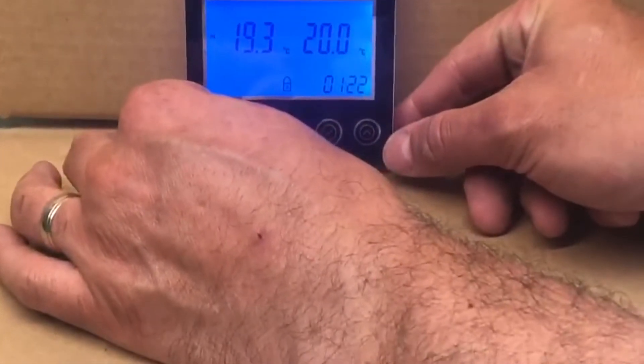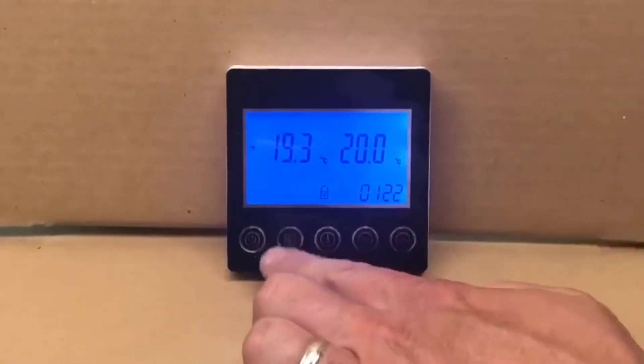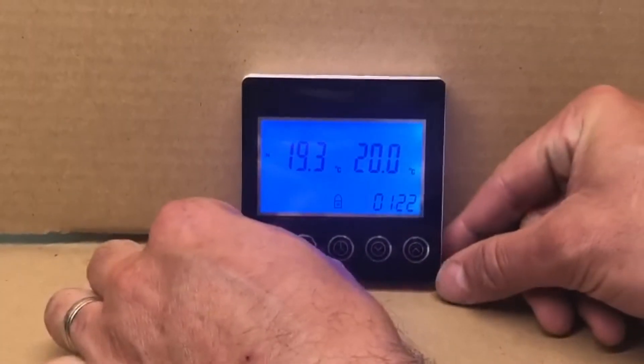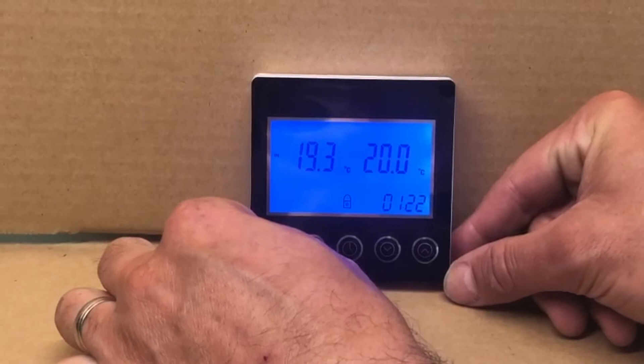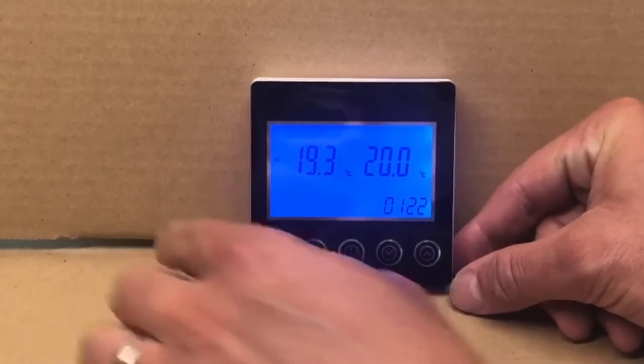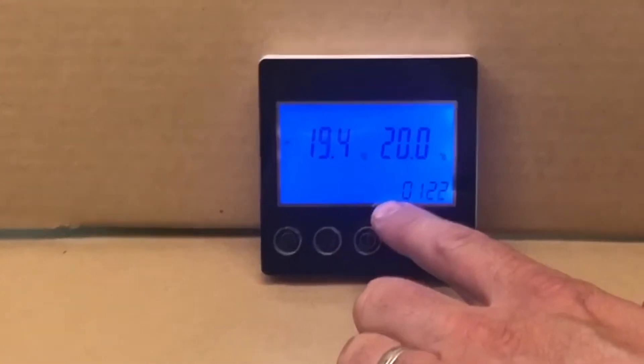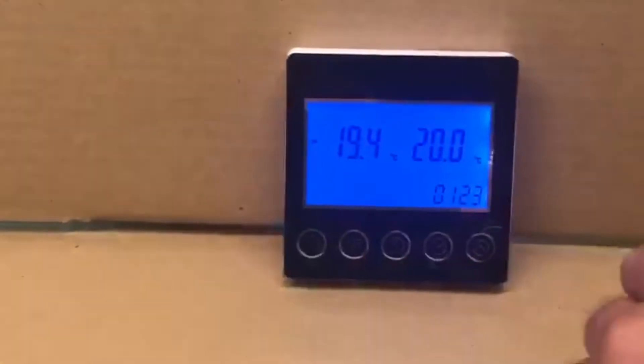Then we're going to press and hold the power button, this one, for five seconds, which removes the padlock. Now we're able to interact with it.